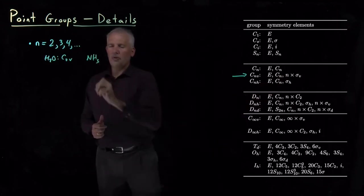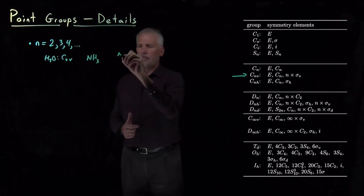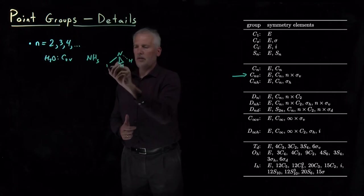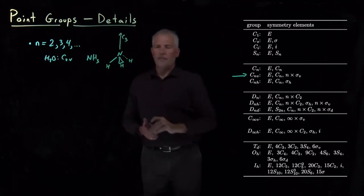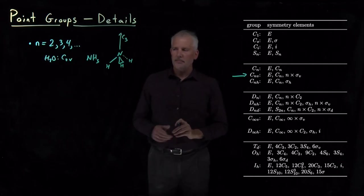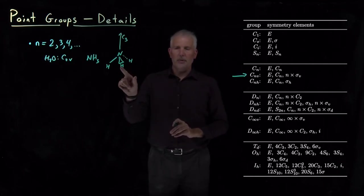But a molecule like ammonia, if I draw the 3D structure of ammonia, ammonia has a C3 rotational axis and its trigonal pyramidal structure.